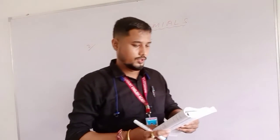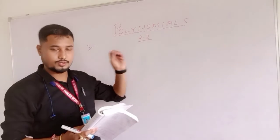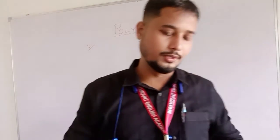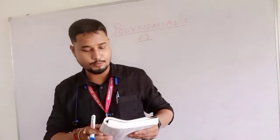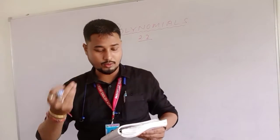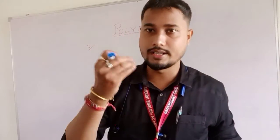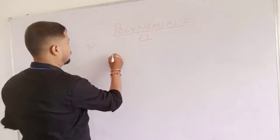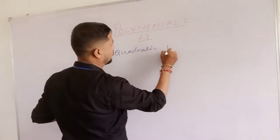Good morning students. Exercise 2.2, question number two: find a quadratic polynomial with the given numbers as the sum and product of its zeros. Question number three is also given. For both questions, we need to find a quadratic polynomial.